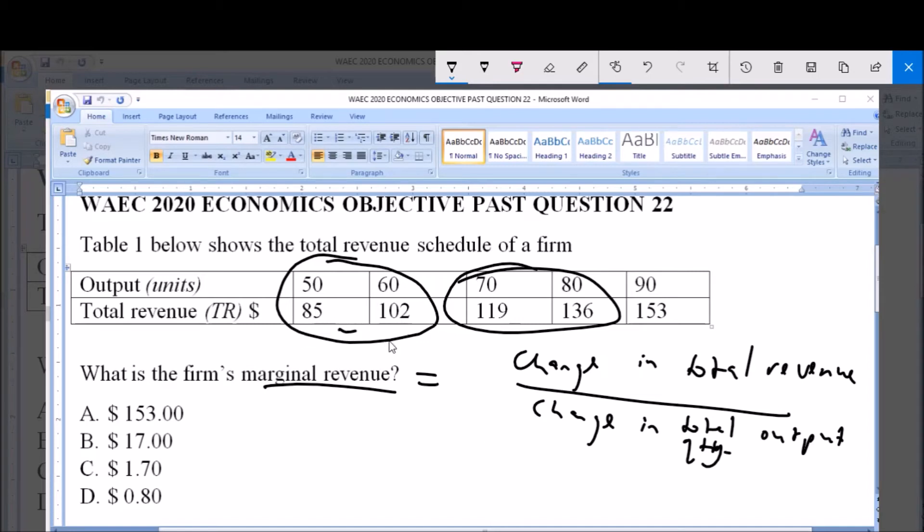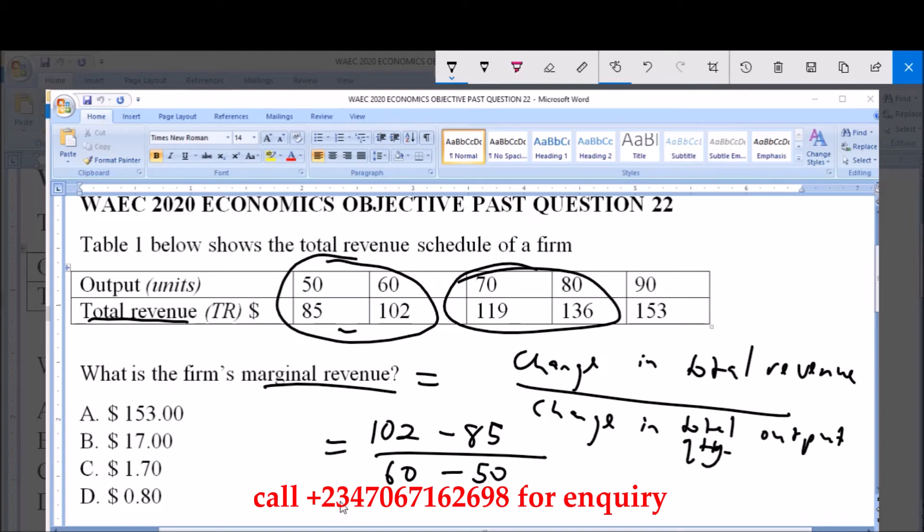So now change in total revenue, that will be equal to 102 minus 85, over change in total output quantity, that will be equal to 60 minus 50.